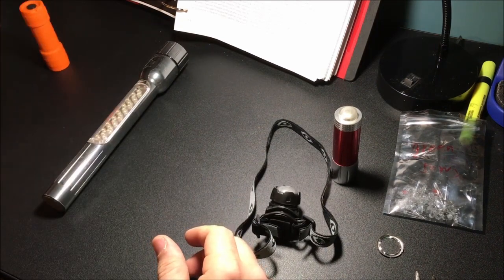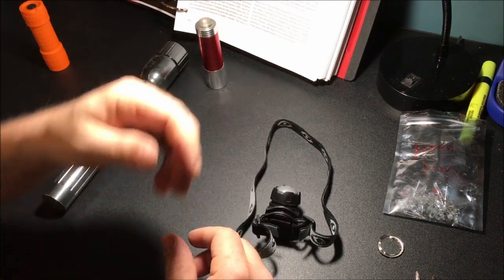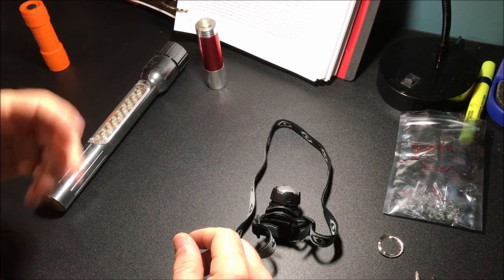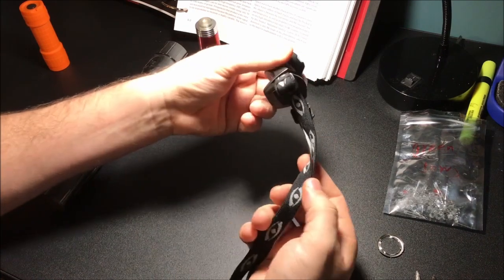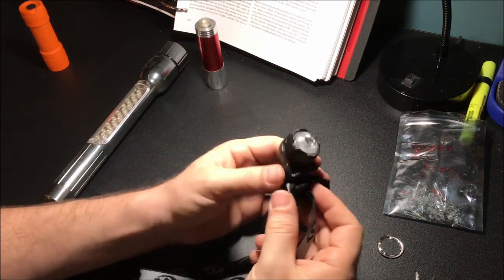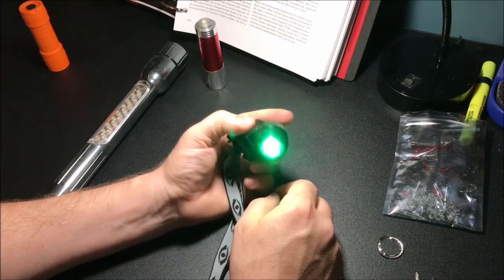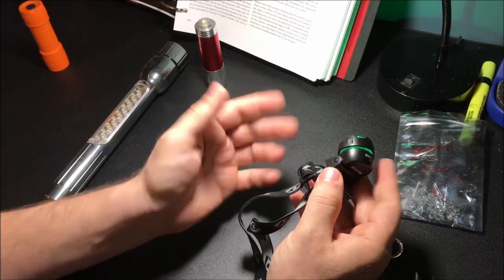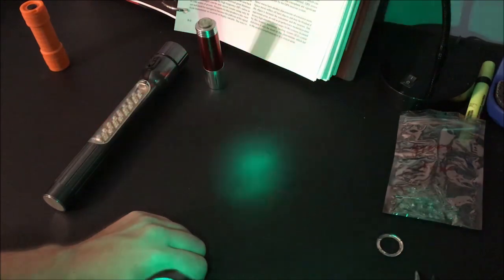Once you do one, it's super easy to convert really anything. Anything that has an LED in it you can just replace. A lot of times you don't even have to use solder, you can use the existing solder. This is a headlamp, very inexpensive, from Walmart. I replaced the white LED with one of these guys. Now I can strap that on my head and wherever I look, I can see what's going on and illuminate my way.